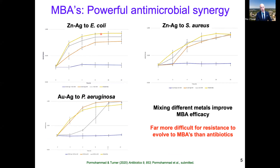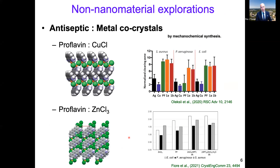An interesting aspect of metals is they are incredibly synergistic when interacting with each other. Here's a growth curve of E. coli: a sublethal concentration of zinc, a sublethal concentration of silver — using each alone allows growth, but using these sublethal concentrations together we see no growth at all. Non-lethal concentrations together give synergistic killing. Similarly, we see zinc with silver against Staphylococcus aureus, and gold with silver against Pseudomonas aeruginosa.